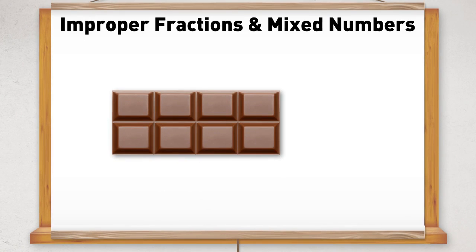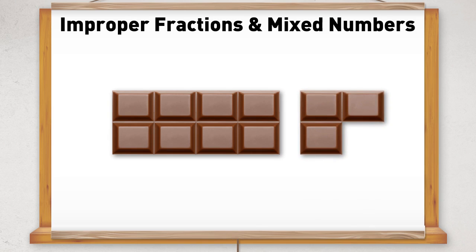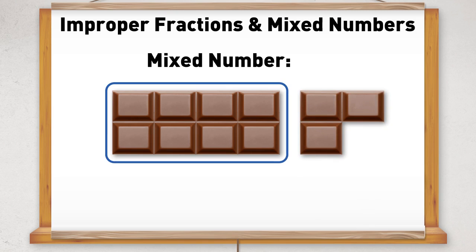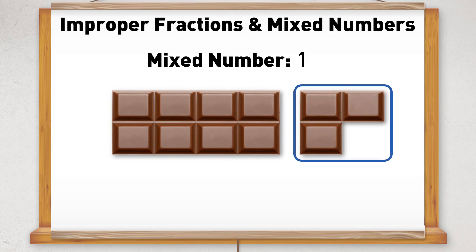In this picture we can see one whole chocolate bar which has been divided into 8 pieces and an extra 3 pieces. So we can write the number of chocolate bars as a mixed number which will be 1 and 3 eighths.